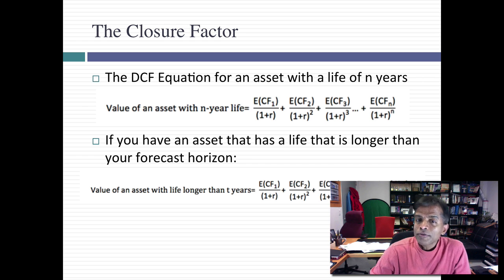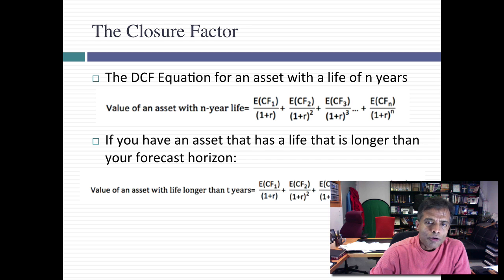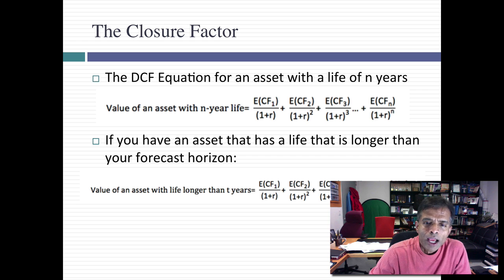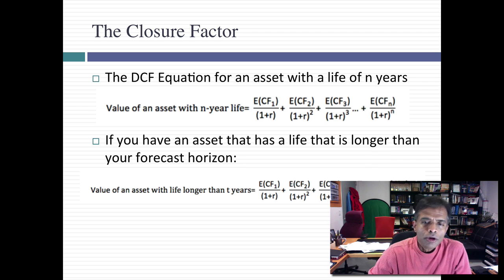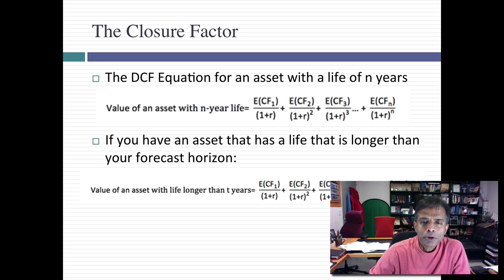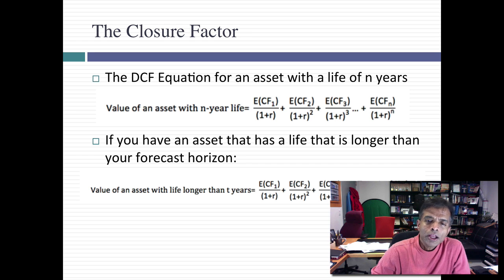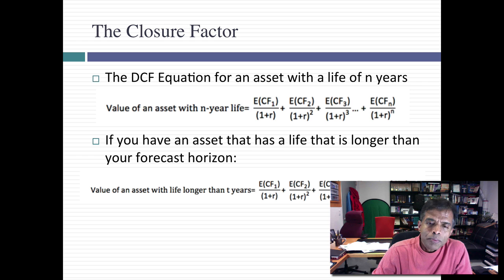But let's say your asset has a life of 30 or 40 or 50 years. You might not have the energy or the resources to estimate cash flows for that long. So what you do is you estimate cash flows for 3, 4, 5, maybe 10 years, and then you stop. But when you stop, you've got to put closure on your valuation, and the terminal value is the way you put closure. So the way to think about the terminal value is it's a number you attach to year 5 or year 10 to reflect all cash flows beyond that point in time. Simple enough, right?